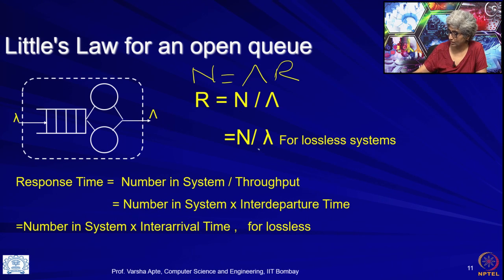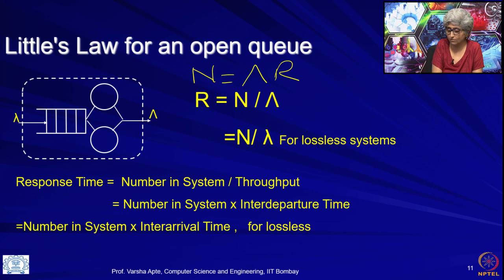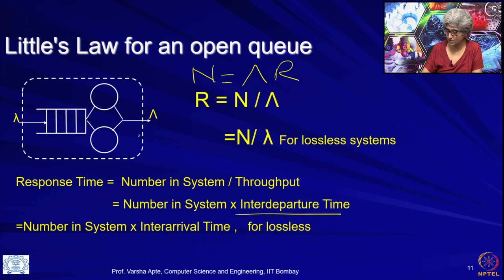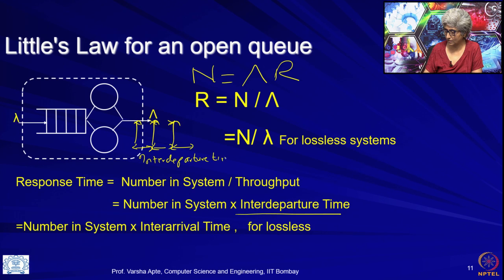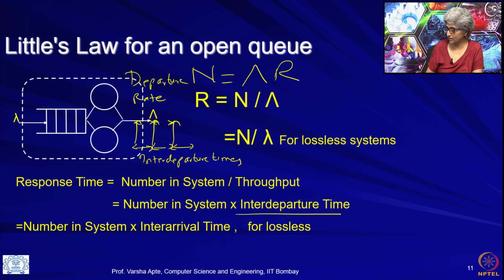I am trying to relate this to what we wanted response time to be intuitively. Response time equals number in system divided by throughput, which means number in system multiplied by inter-departure time. If customers are departing the system at certain points, those times are the inter-departure times. There is a departure rate which is the throughput, and 1 over departure rate is the inter-departure time. It is very non-intuitive that response time equals number in system multiplied by the inter-departure time.